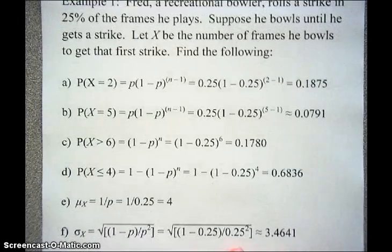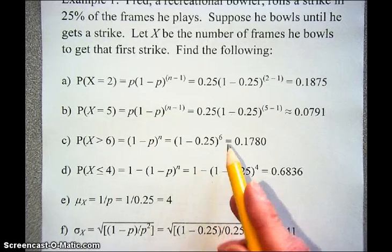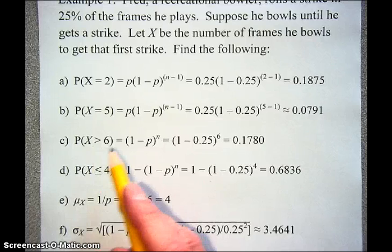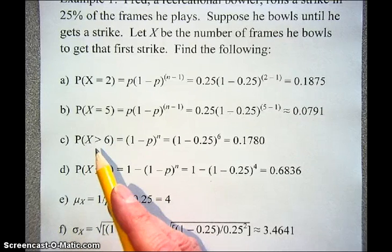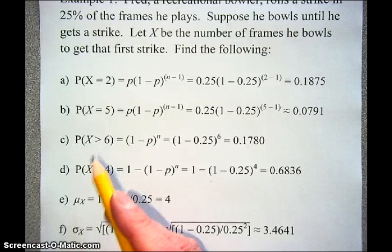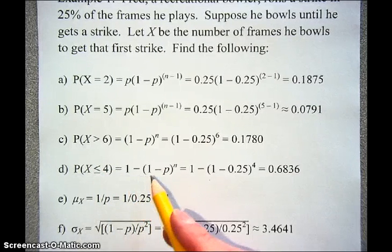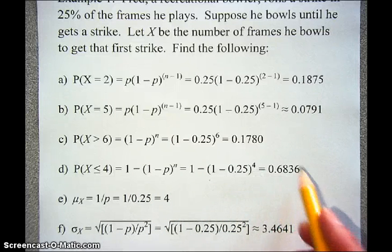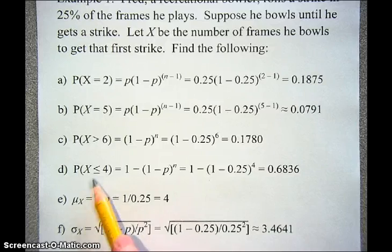The probability that X is greater than 6 is (1 minus P) to the 6th power: (1 minus 0.25) to the 6th, which equals 0.1780. The probability that X is less than or equal to 4 is 1 minus (1 minus 0.25) to the 4th power, which works out to 0.6836. You can use geometric CDF on the calculator for this cumulative probability.